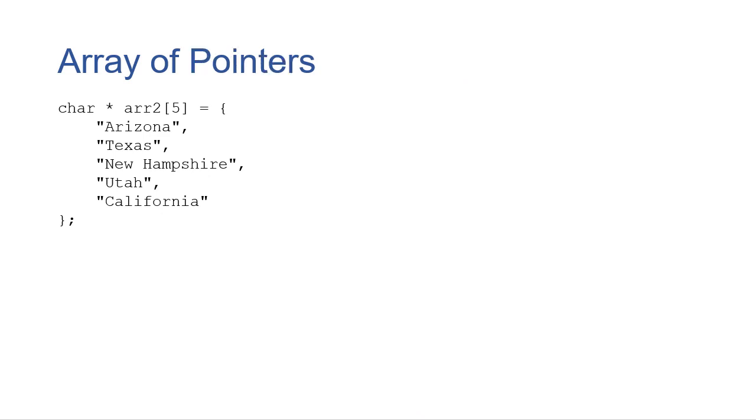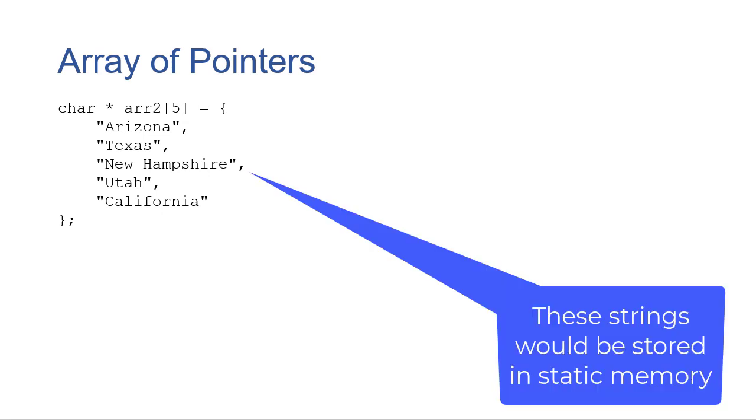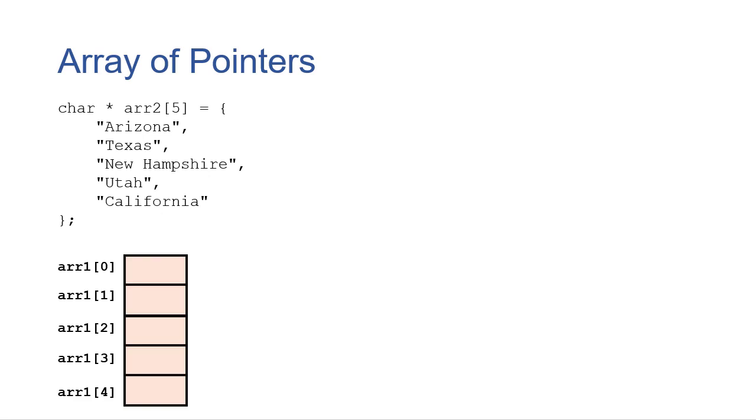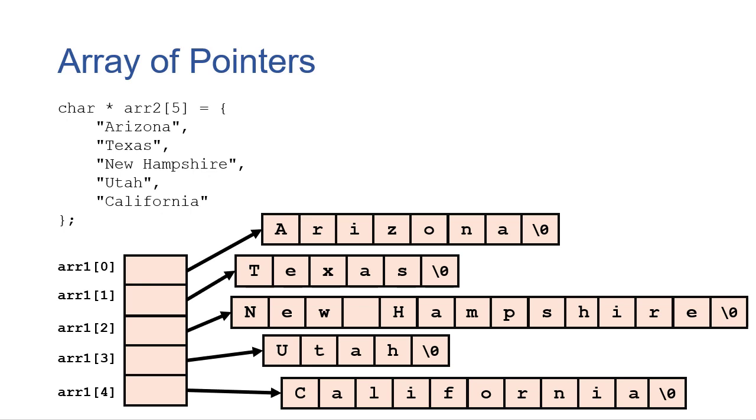So another way we could do this is with an array of pointers. So here I have five pointers. Notice the initializer is exactly the same. Although, to be clear, I'm not allocating any memory here. So that is a consideration. But initializing it is the same. So this gives me an array of five pointers, indexes 0 through 4. And each of those pointers points to a string. Now notice here we've only allocated enough memory for the actual string. The characters of the string plus the null. So we're not wasting any space with the string.